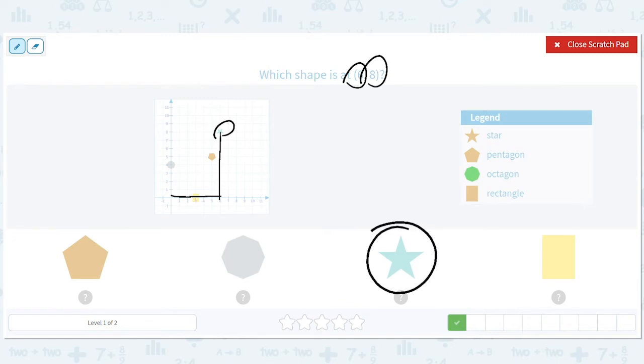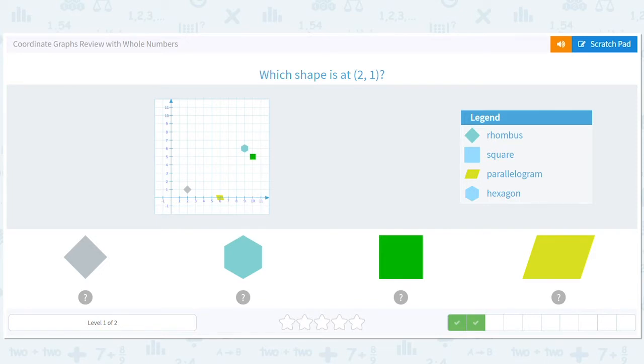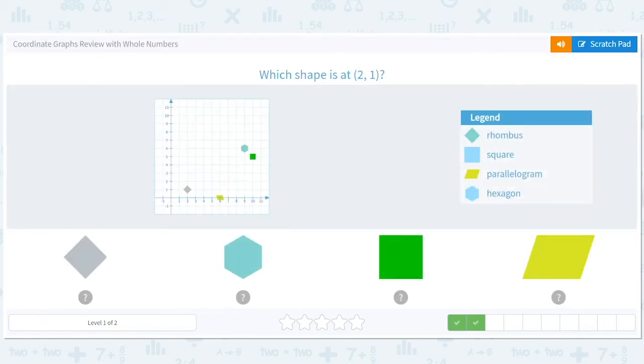What shape is at (2,1)? We go two to the right, up one, and this time we get a square or diamond, a tilted square. We're going to say rhombus.